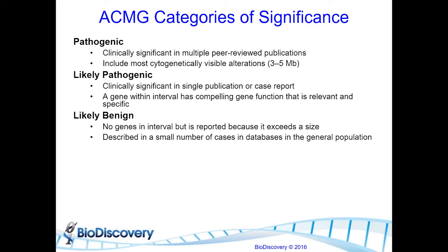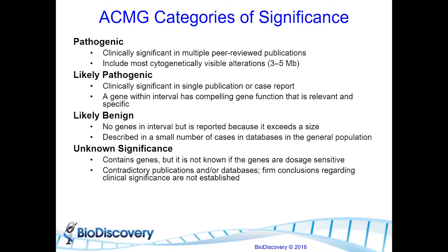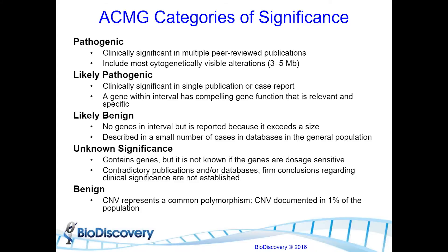Likely benign means no genes are reported but it exceeds a certain size parameter — again, lab-based parameters — or it may have been described in a small number of cases in a general population without enough volume to confirm benignity. Unknown significance applies to regions containing genes with unknown dosage sensitivity, or where there are contradictory reports with no firm conclusions. Finally, benign results are typically our common CNV polymorphisms — ACMG defines a common polymorphism as a CNV documented in at least 1% of the population.